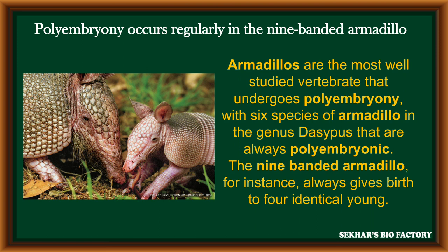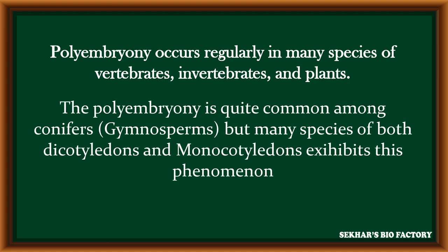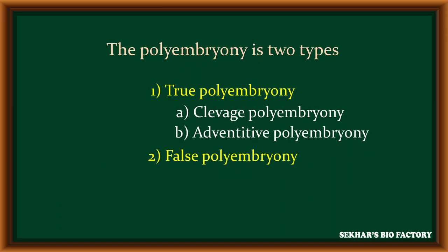Polyembryony is a regular process in most species of vertebrates, invertebrates, and even in plants. It is quite common among conifers like gymnosperms, and in many species of both dicotyledons and monocotyledons. Polyembryony is basically of two types: the first type is true polyembryony — further divided into cleavage polyembryony and adventitive polyembryony — and the second type is false polyembryony.